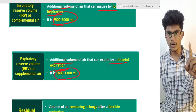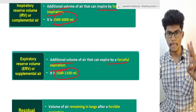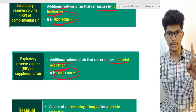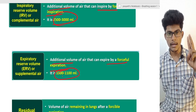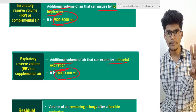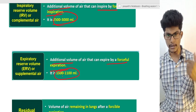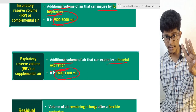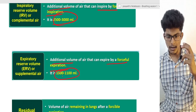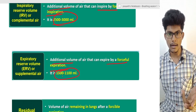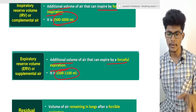Let's look at these three together: Tidal Volume, Inspiratory Reserve Volume, and Expiratory Reserve Volume. In Tidal Volume we inhale and exhale normally. In Inspiratory Reserve Volume we inspire with force to take in additional air. The third is Expiratory Reserve Volume — we expire with force to push out additional air.